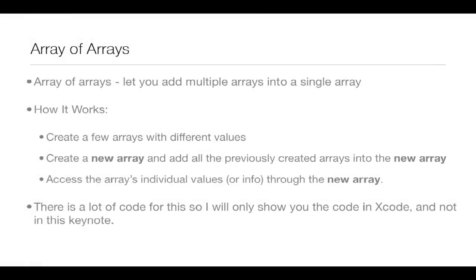Now on to array-of-arrays. Array-of-arrays let you add multiple arrays to a single array — this is the object-oriented way of doing it. How it works: you create a few different arrays with different values, then create a new array and add all the previously created arrays into that new array. You can then access the individual values through this new array. The concept is pretty simple, but it helps to see it in code, so we're going to jump into Xcode right now to code up multi-dimensional arrays and then array-of-arrays.